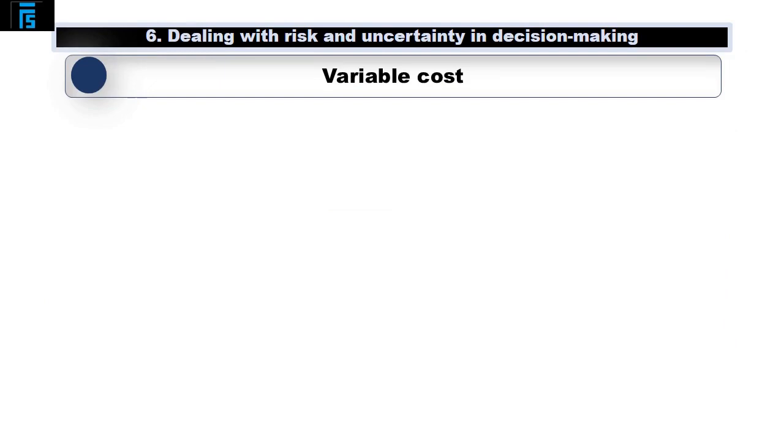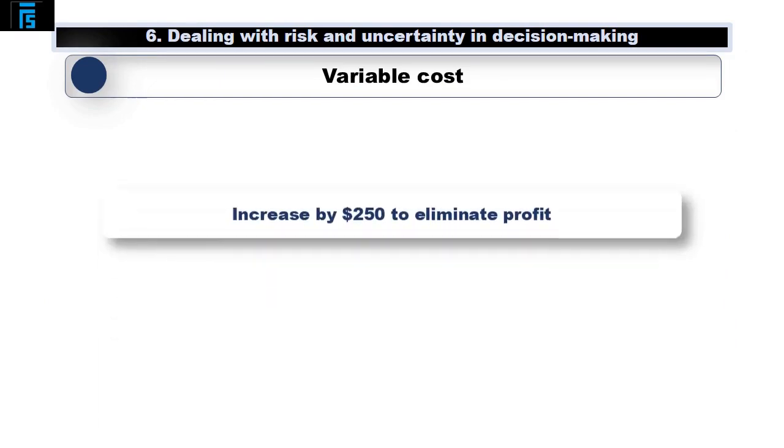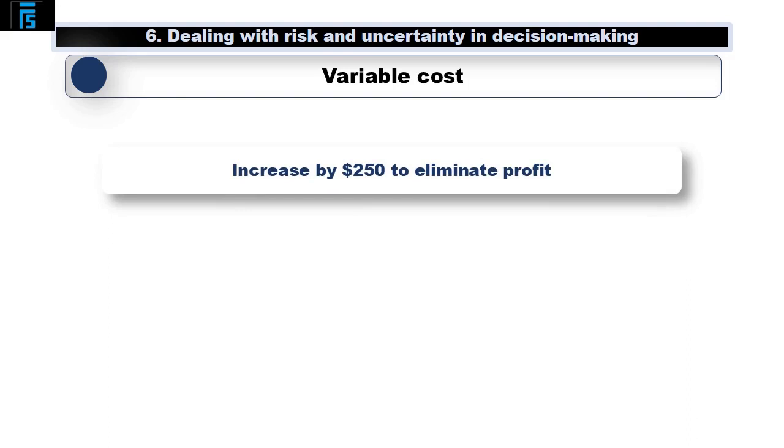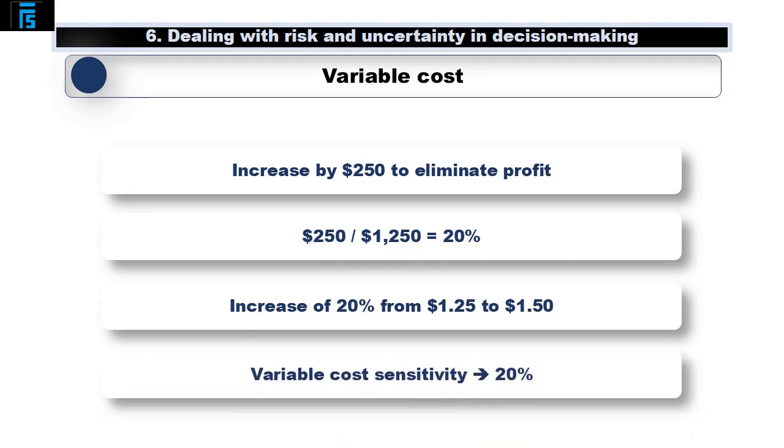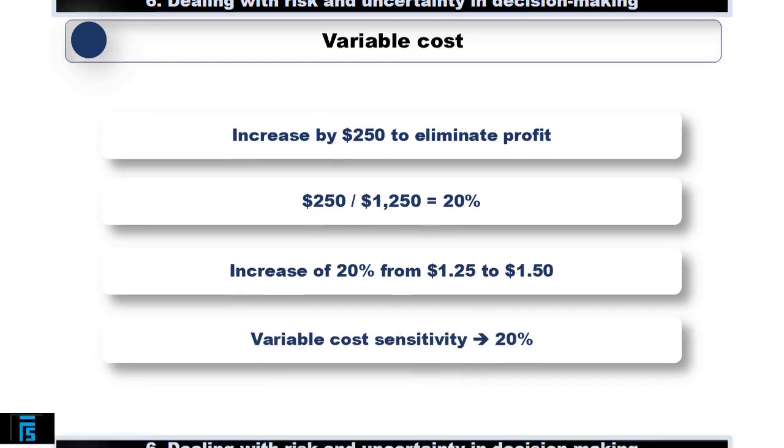Next, variable cost. Variable cost would have to increase by $250 to eliminate the profit and change Jack's mind, which is an increase of $250 over $1,250 is 20%, or an increase from $1.25 per yoghurt to $1.50 per yoghurt. Jack is 20% sensitive to his original estimate of variable cost.